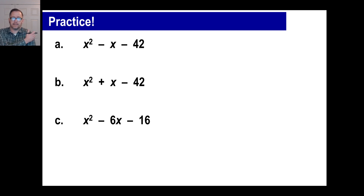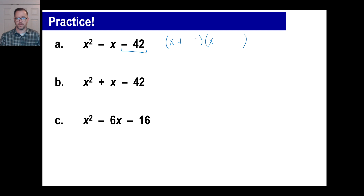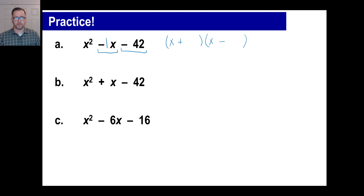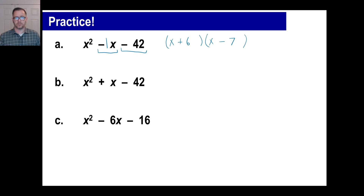Let's try practice problems — pause here and try A. For A, we need two numbers that multiply to give a negative, which tells us immediately one has to be positive and one negative. We also want those two numbers to add up to negative 1. What two factors of negative 42 add together to give negative 1? You remember 42 is 6 times 7 — so that's positive 6 and negative 7, because 6 plus negative 7 is negative 1, and they multiply to give negative 42.